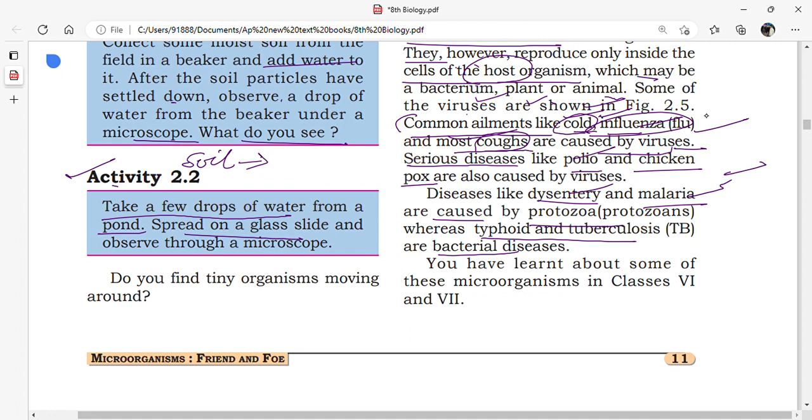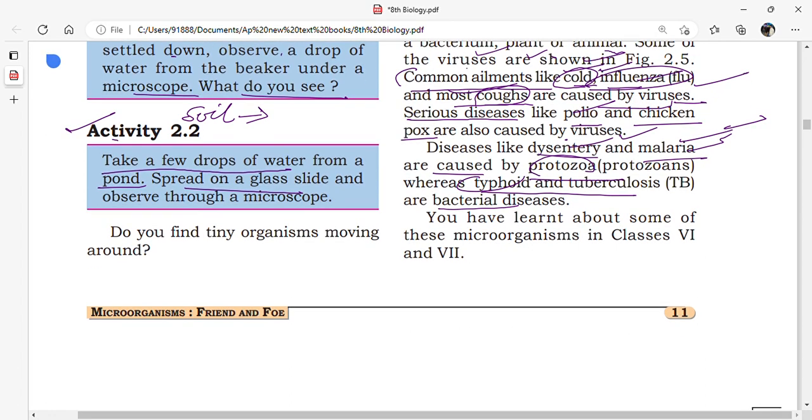What are the protozoan diseases? Dysentery and malaria. Dysentery means watery motions like loose motions. Malaria is a fever caused by the pathogen Plasmodium and the vector is female Anopheles mosquito. What are the bacterial diseases? Typhoid and tuberculosis are diseases caused by bacteria.